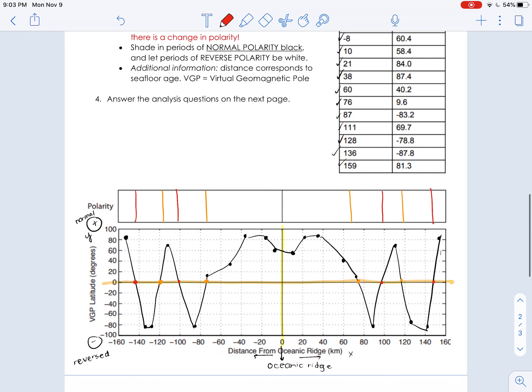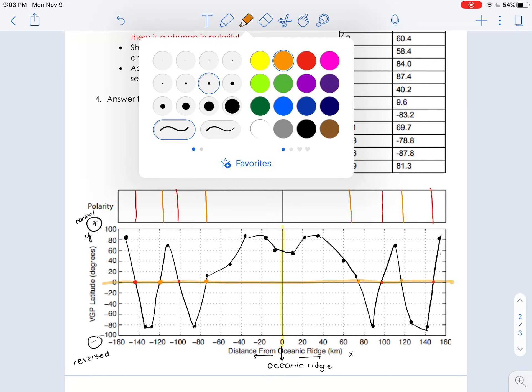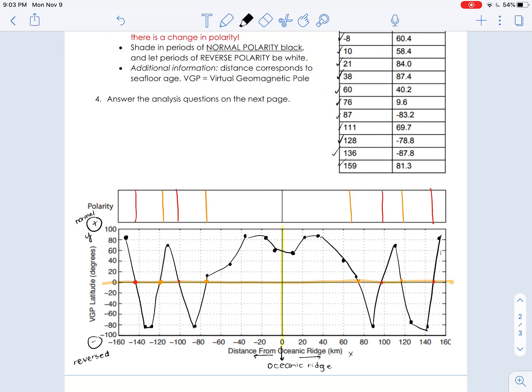And our directions tell us to shade in periods of normal polarity in black. So remember, normal polarity is going to be when we are up in this positive. So this would be normal polarity.